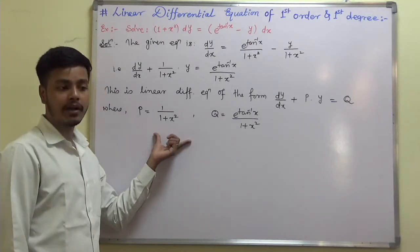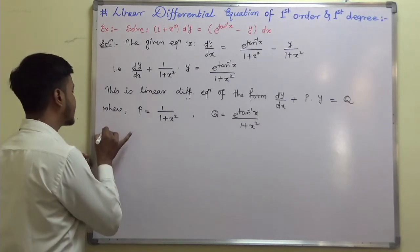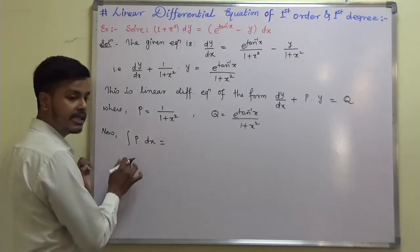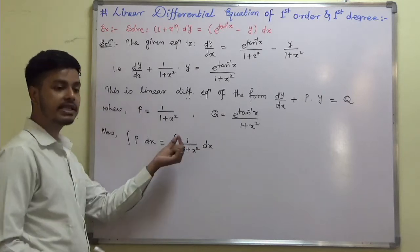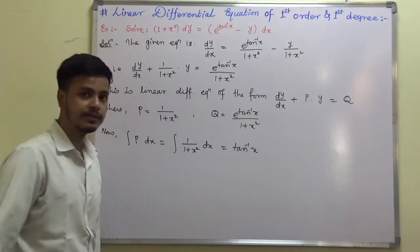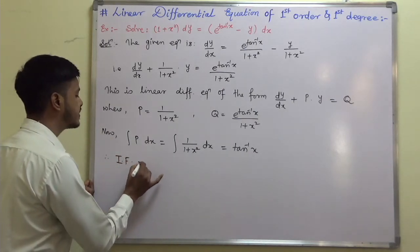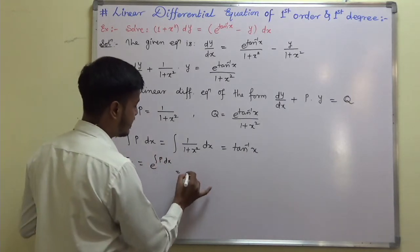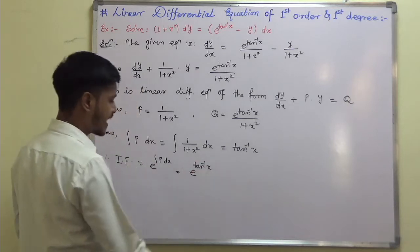This is step number 1. Step number 2 says: find the integrating factor. But before that, we first find the integration of P dx. Integration of P dx is the integral of 1/(1 + x²) dx, which equals tan⁻¹x. Therefore, the integrating factor is e^(tan⁻¹x).